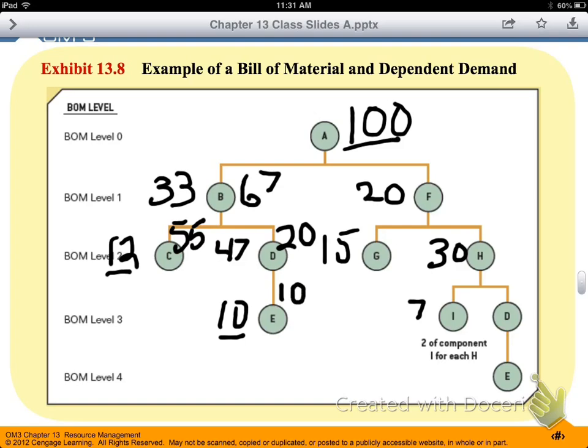So let's go down the other branch of our diagram. Over here with F, we need to get to 100 A items from our 20 F items on hand, which means we need to produce 80 more F items. And in order to satisfy that demand, if we've got 15 G items in stock, we know we need to produce another 65 G items.